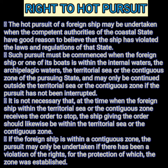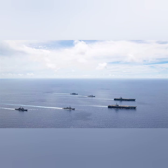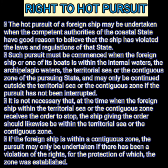It is not necessary that at the time when the foreign ship within the territorial sea or contiguous zone receives the order to stop, the ship giving the order should likewise be within the territorial sea or the contiguous zone. If the foreign ship is within a contiguous zone, the pursuit may only be undertaken if there has been a violation of the rights for the protection of which the zone was established. In simple terms, if a foreign ship commits a crime in internal waters, territorial sea, or archipelagic waters, the coastal state may from a different zone ask the vessel to stop, and if the ship does not stop, they have the right to hot pursuit. They can continue to pursue the vessel as long as they are in the territorial sea or contiguous zone, and further follow them beyond these waters unless interrupted.